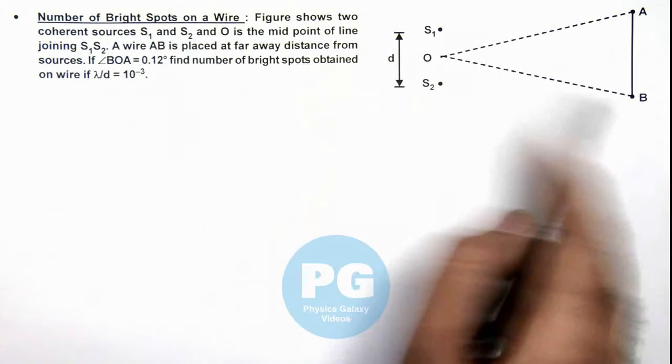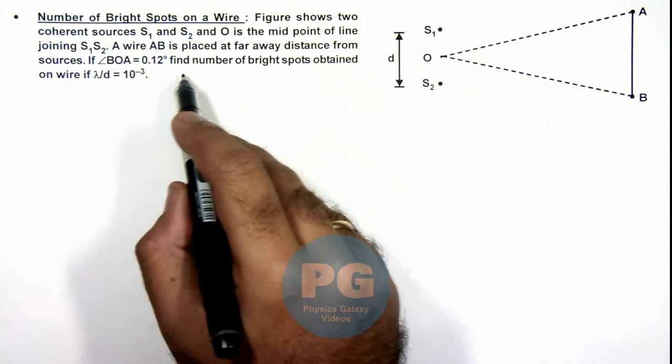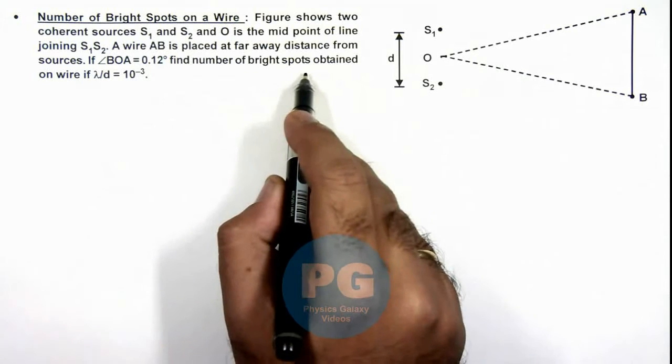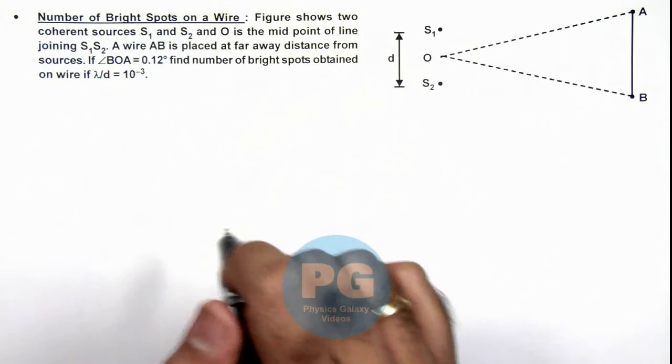The angle BOA is 0.12 degrees. We are required to find number of bright spots obtained on wire if λ/d is given as 10⁻³.